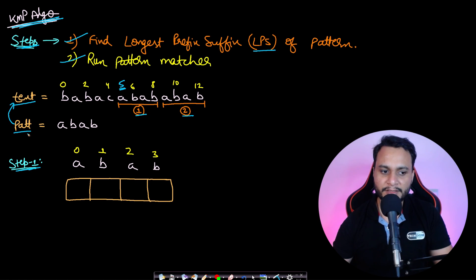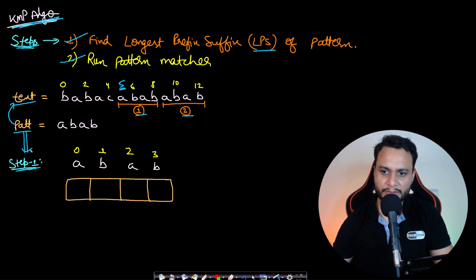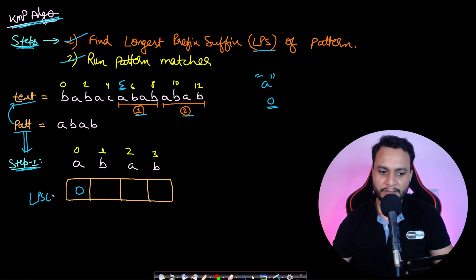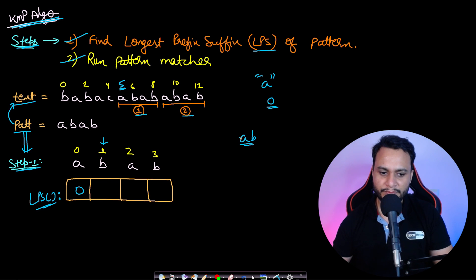According to step one, we form the LPS array from the pattern. We are finding the longest prefix which is also a suffix, considering only proper prefixes, which do not include the entire string. So if your string is just 'a', the longest prefix which is also a suffix has length zero. Therefore the LPS value for the first index is always zero, and we start filling from index one, i.e., the second character.